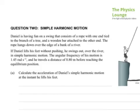Hey, this is the 2012 question 2 mechanics paper on simple harmonic motion. Daniel is having fun on a swing with a rope tied at one end, it's a pendulum. Daniel lifts his feet without pushing at the start of the swing and swings out over the river in simple harmonic motion. The angular frequency of the motion is 1.45 radians per second, that's important, and he travels a distance of 0.80 metres before reaching the equilibrium position.